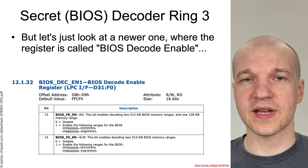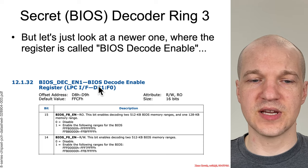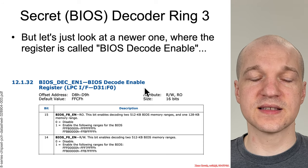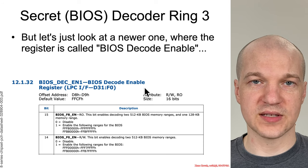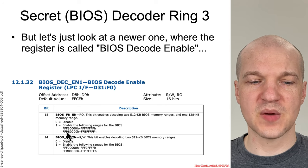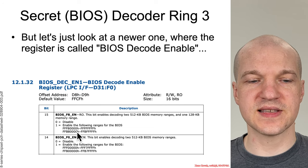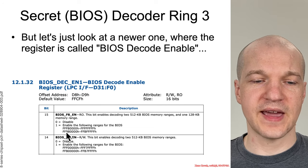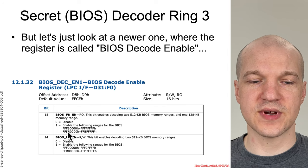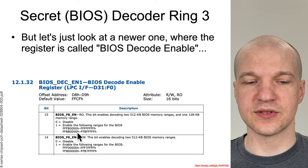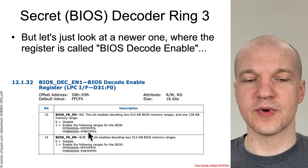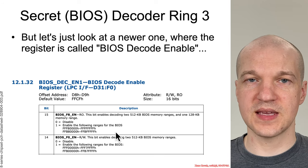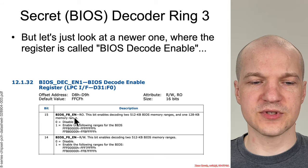If we look at a more modern equivalent, it's instead called the BIOS Decode Enable, and it maps to the SPI flash chip. It says the exact same thing and is in the exact same location — the address range from 0xFFF80000 all the way to all Fs — all of this maps into the SPI flash chip.